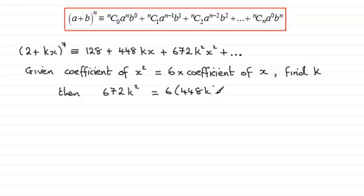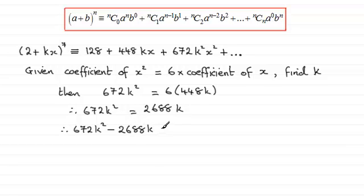If we expand this, we've got 672k² equals 6 times 448, which gives us 2688k. So we've got a quadratic equation here. In the normal way, I'd want to rearrange this to make it equal to zero, so I'll take away 2688k from both sides.